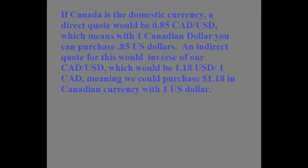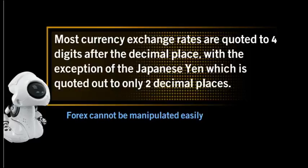The indirect quote for this would be the inverse of CAD/USD, which would be $1.18 US dollars is equivalent to $1 Canadian dollar, meaning that we could purchase $1.18 Canadian currency with $1 US dollar. In the forex spot market, most currencies are traded against the US dollar, meaning that the US dollar is frequently the base currency in the pair. In these cases, these are known as direct quotes, which applies to our earlier example with the US dollar and the Japanese yen.